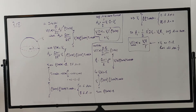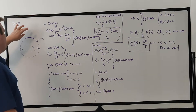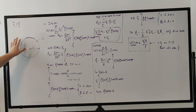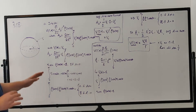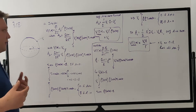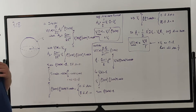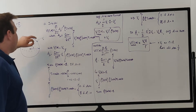Examples 3.6 and 3.7 essentially go through the general solution, finding the general solution for the potential inside and outside a hollow sphere. So this is a hollow sphere with a potential along its outer surface that is constant. Those two examples solve Laplace's equation for the inside and outside regions of the sphere.